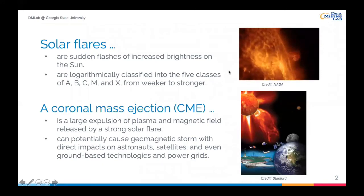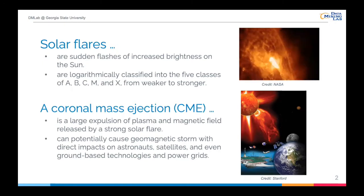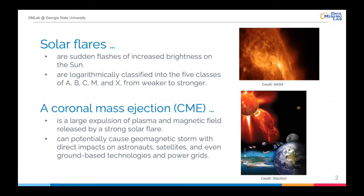To begin with, I'd like to provide some background information regarding the solar flare. Solar flares are sudden flashes of increased brightness on the sun. An example of a solar flare is depicted on the right-hand side. Solar flares are logarithmically classified into five classes of A, B, C, M, and X, from weaker to stronger.